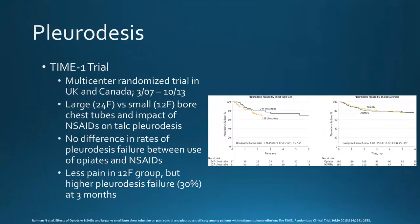The TIME-1 trial addressed management of chest tubes for pleurodesis. It showed you don't need a larger-bore chest tube to perform pleurodesis — a small bore works. It also showed that avoiding NSAIDs is not necessary; you can use NSAIDs as well as opiates without causing pleurodesis failure after the immediate procedure, despite the traditional concern about suppressing the pro-inflammatory response needed for pleurodesis.